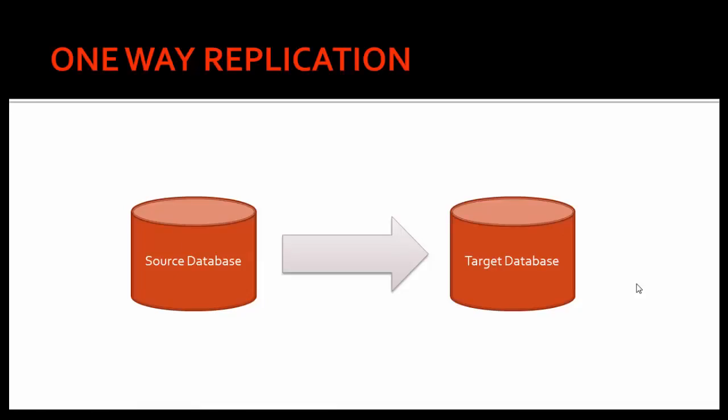The first topology in GoldenGate is one-way replication. That means you will have only one single source database and one target database, and the replication will go from the source to the target. In GoldenGate we can set up multiple types of replication: entire database replication, single schema replication, or single table replication. So from the source database, replicated data — whether entire database, schema, or table — flows to the target. This is the most common replication setup.